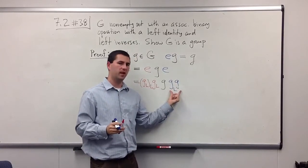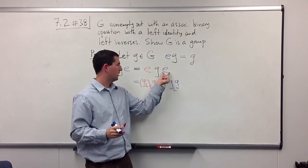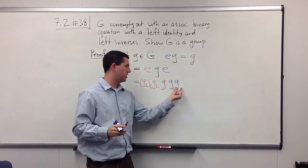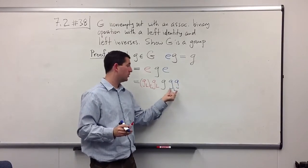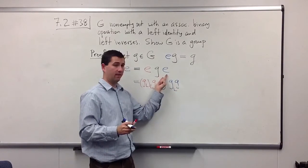All right. Why is this a suitable replacement for e? Well, e is the identity, and I know that g has a left inverse, right? Namely g_l. When I multiply the left inverse by g, I get back the identity element.